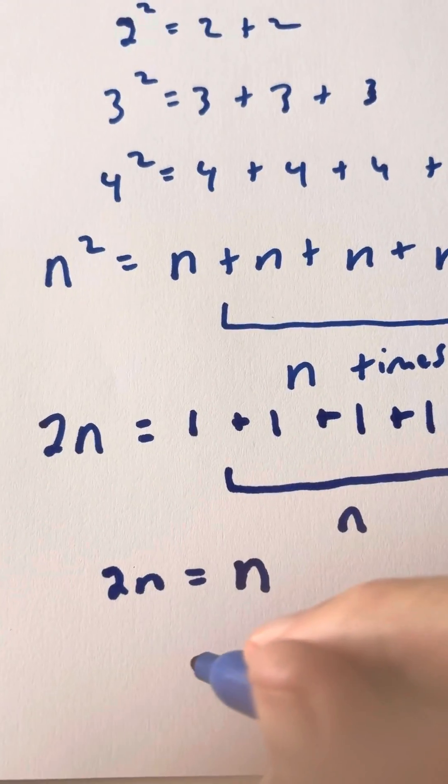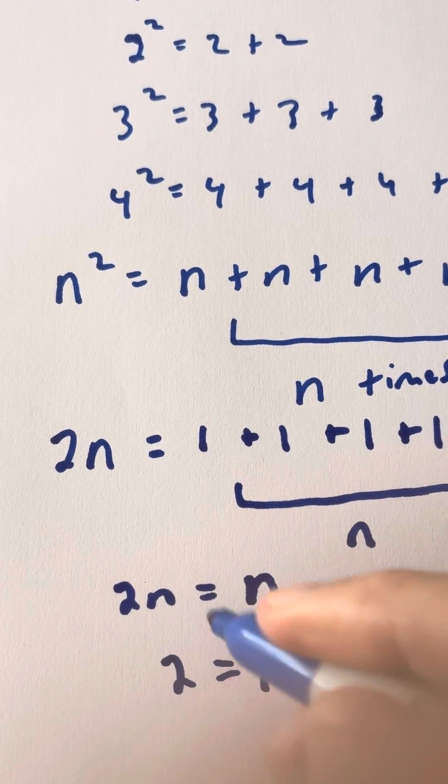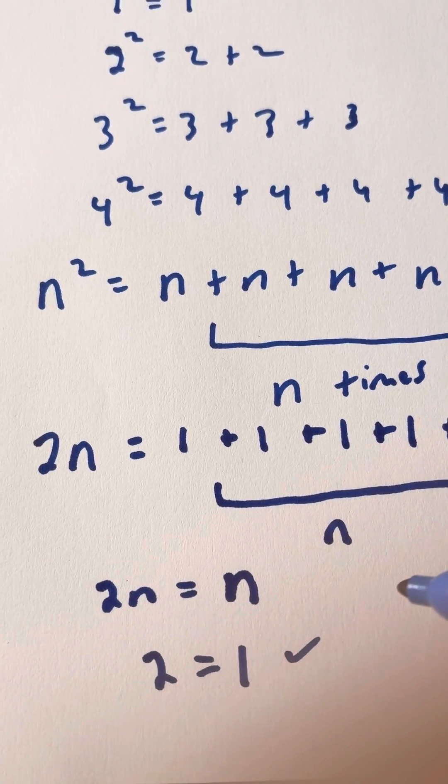So now we have 2n equals n. And if you divide both sides by n, you get that 2 equals 1. And that proves that 2 equals 1 using calculus.